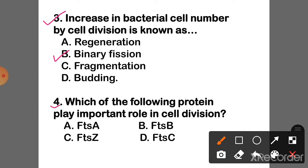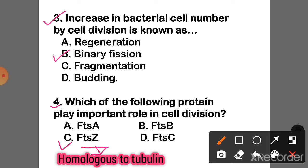Question 4: Which of the following proteins play an important role in cell division? The correct answer is Option C — FtsZ protein. It is homologous to tubulin protein.